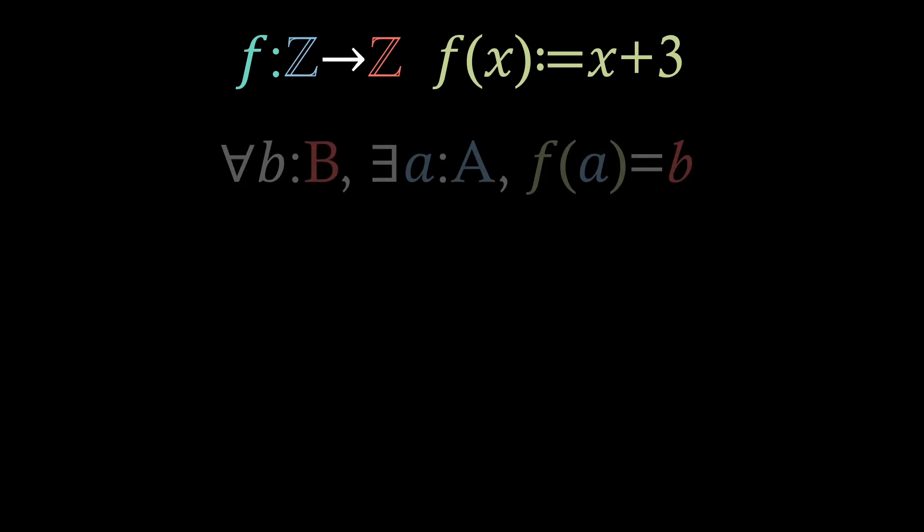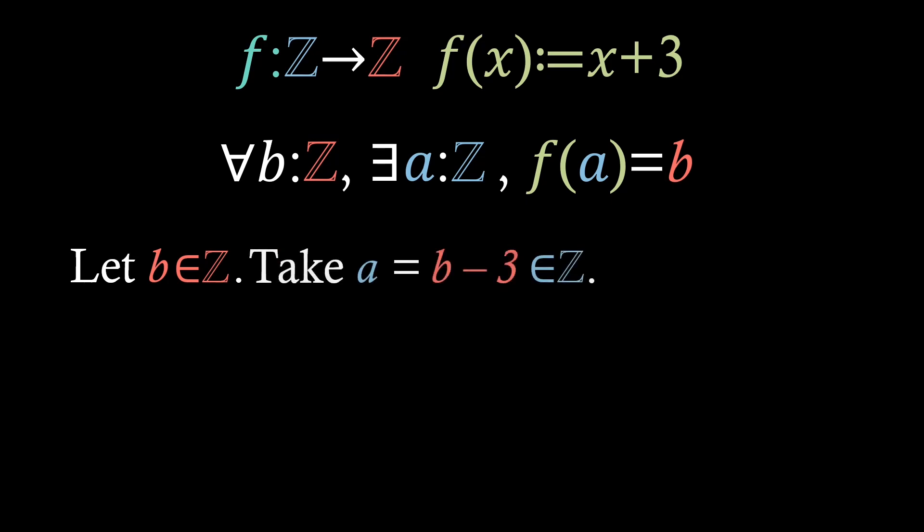So let's start by recalling the definition of surjectivity, and let's apply it to our case, where the domain and codomain are both integers. So, let's suppose that we have a value b that's an integer. And if we take a to equal b minus 3, which we know is also an integer, as an integer take away an integer is an integer,